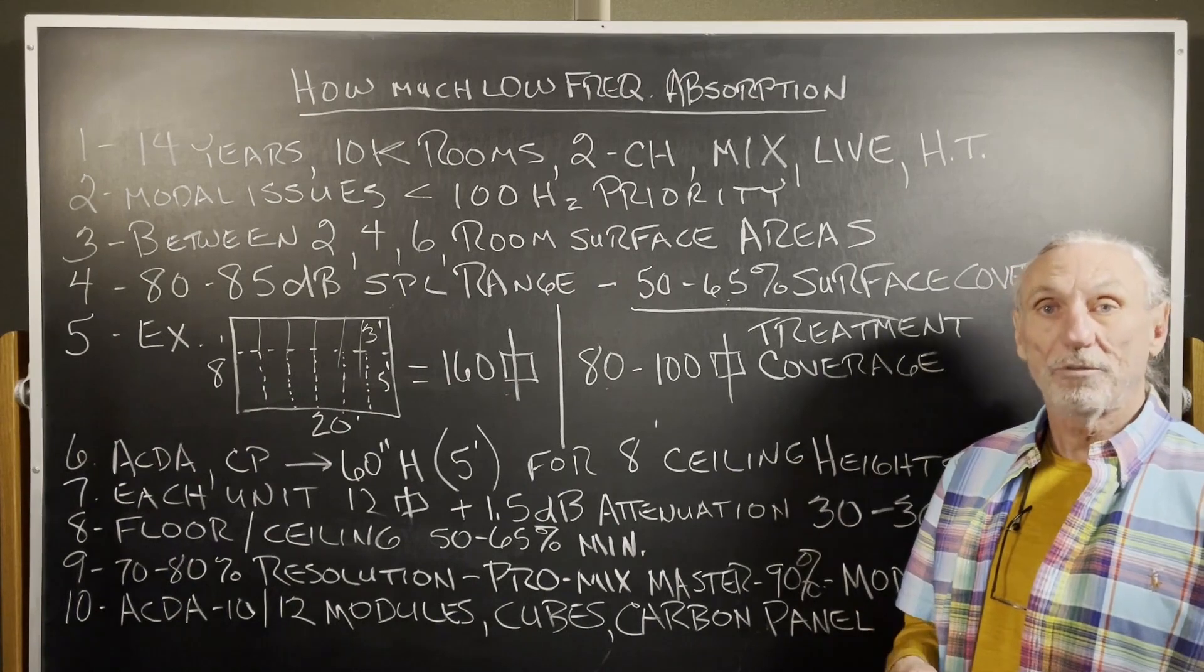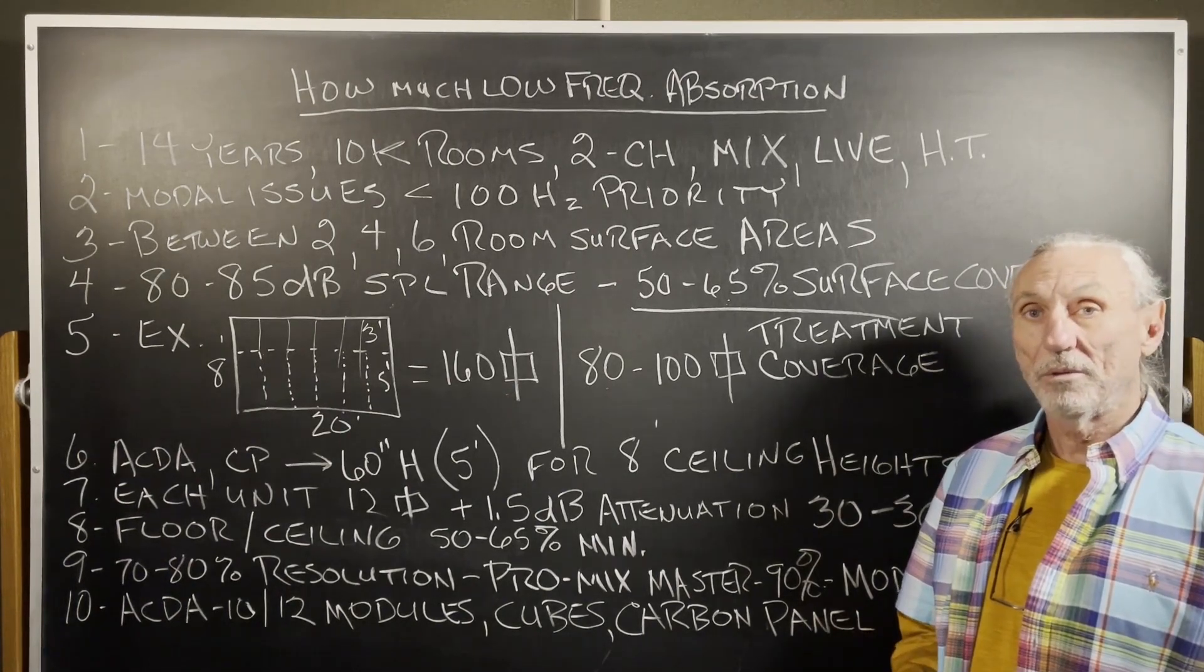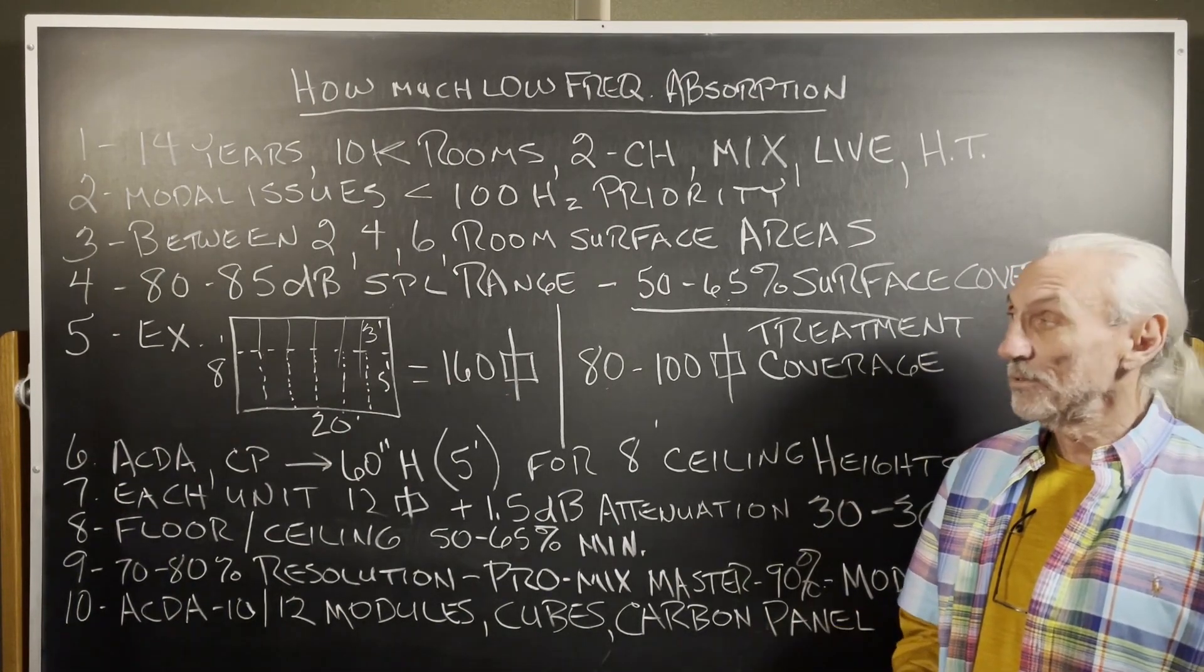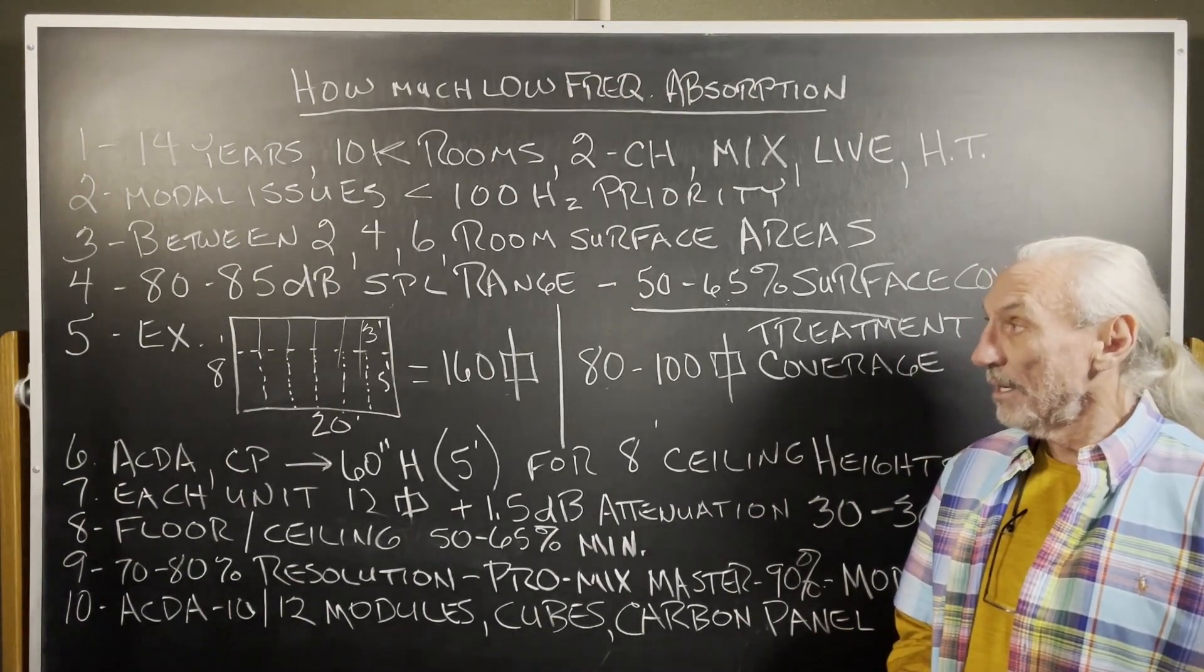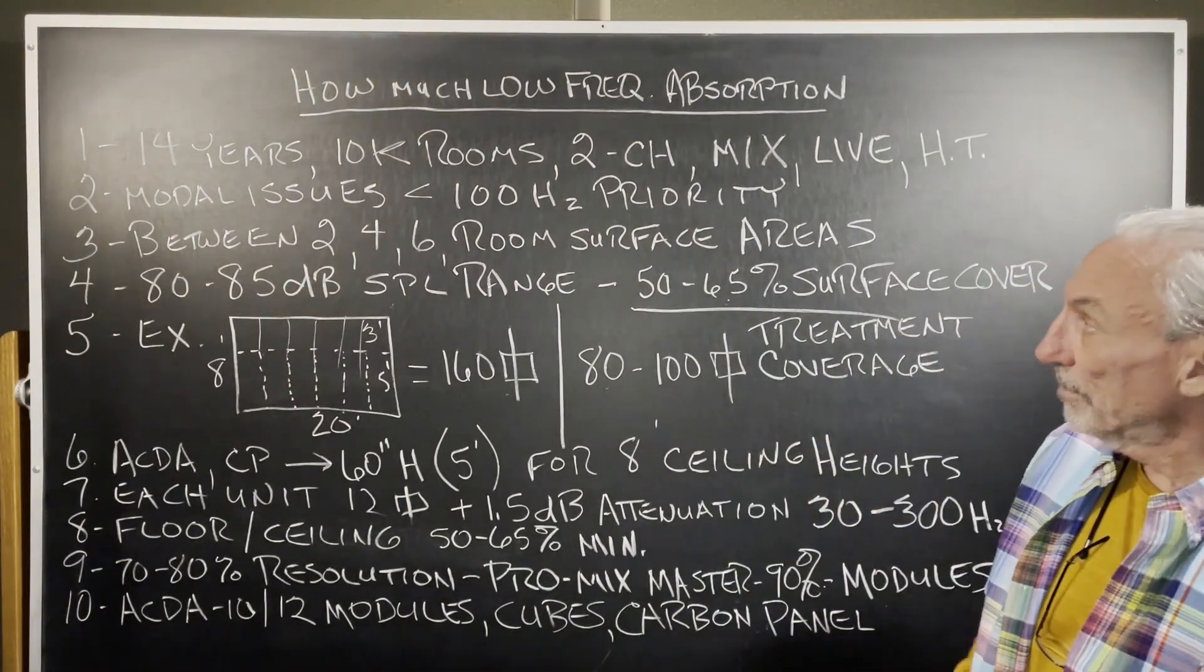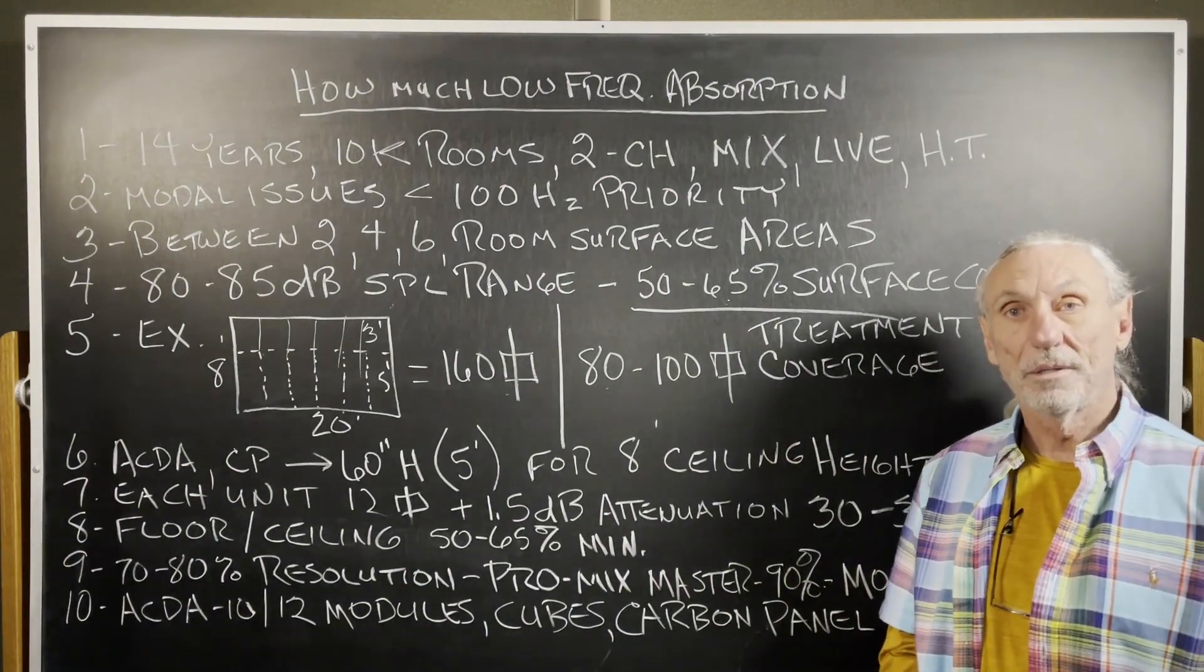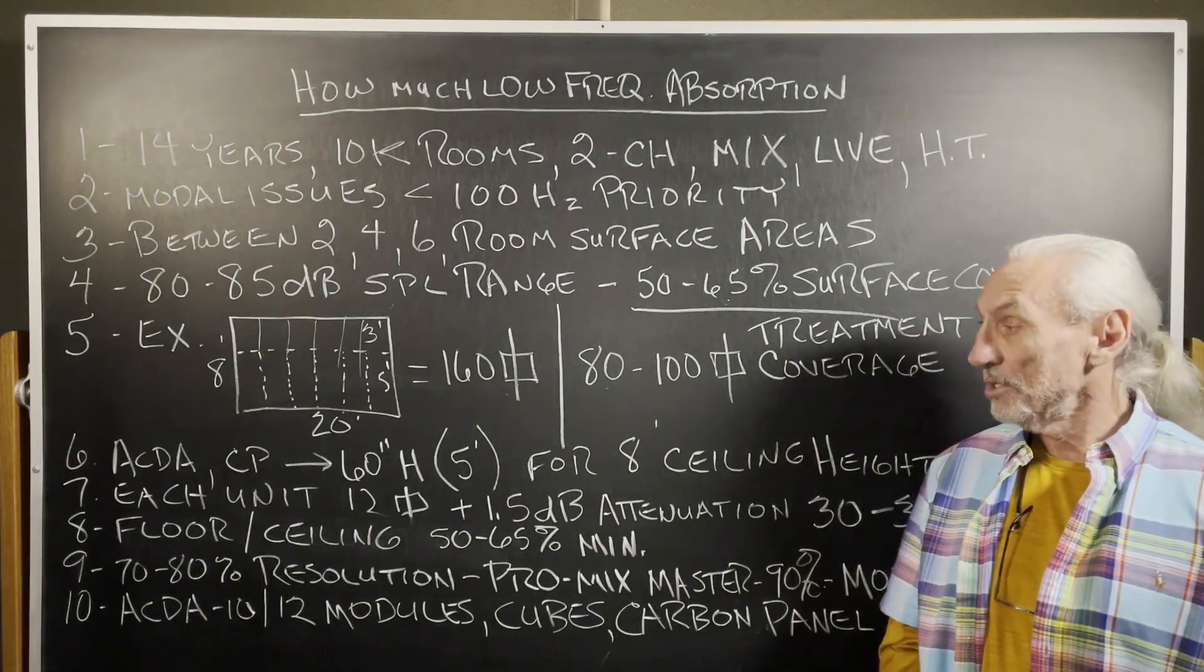Carbon panel goes to 40. You may not need to go that low depending on your room and usage. That takes 12. So it's 12 minimum to get relief from this less than 100 cycle modal issues that you have in your room.